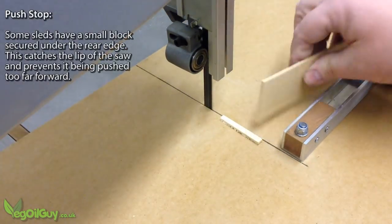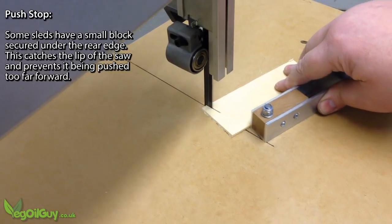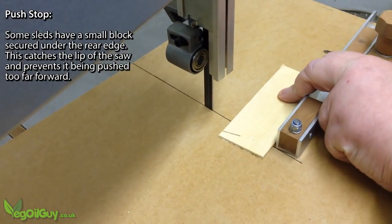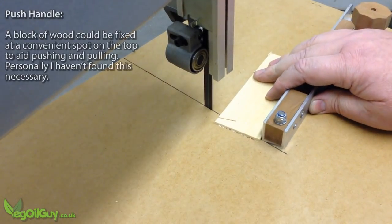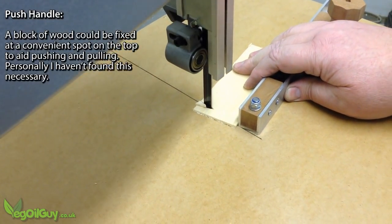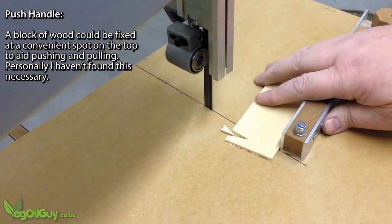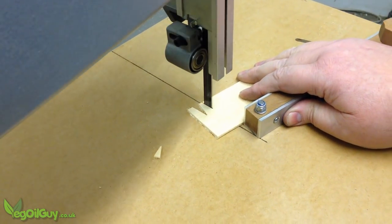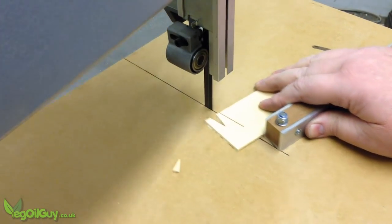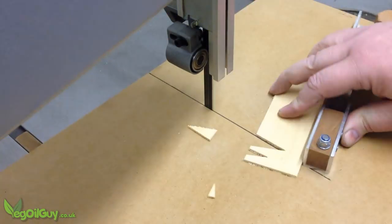Some people like to secure a stop to the underside to prevent the sled from being pushed too far forward, but I'm happy just to stop pushing. And finally, a simple handle could be screwed on to help with the pushing and pulling. But personally, I'm happy with the sled just as it is now. It costs me nothing to make as I have everything lying around and it does allow for quick, accurate cuts of any angle that I like.